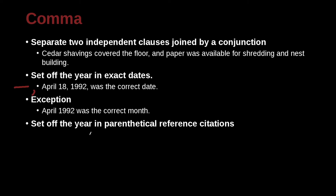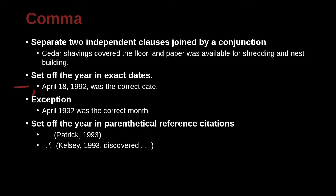You can also use a comma in a parenthetical reference in a citation. For example, writing a sentence and saying 'Patrick, 1993.' This is APA style — in MLA style we do not use the comma, but we'll look at that later. Another example of APA style: 'Kelsey, 1993, discovered something.' So we separate the name from the year, and we also separate it out at the end.